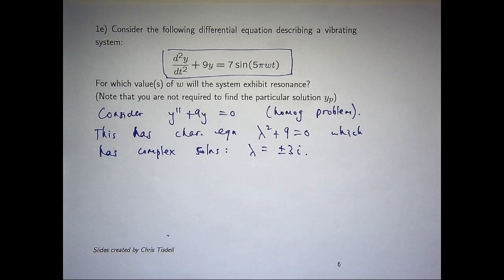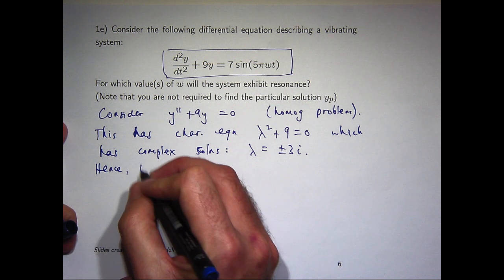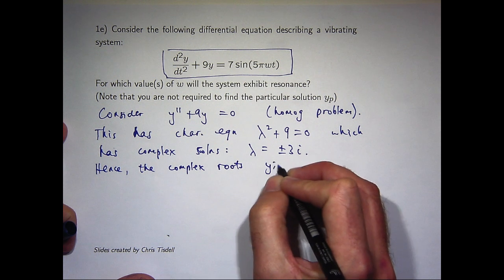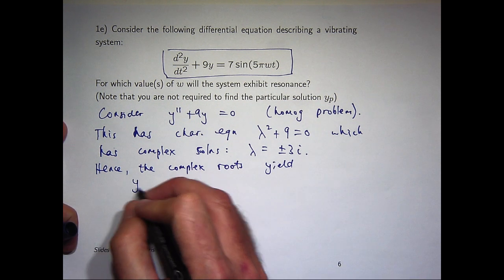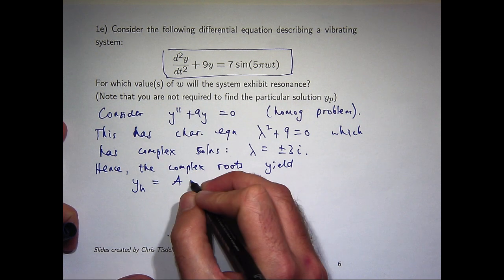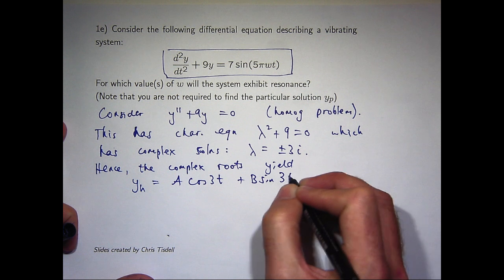Lambda is going to be positive 3i and negative 3i. Now, in this complex case, and furthermore, the lambdas have 0 real part, we know that the general solution to the homogenous problem is a linear combo of cosine and sine. Let's call the solution to the homogenous problem y sub h.